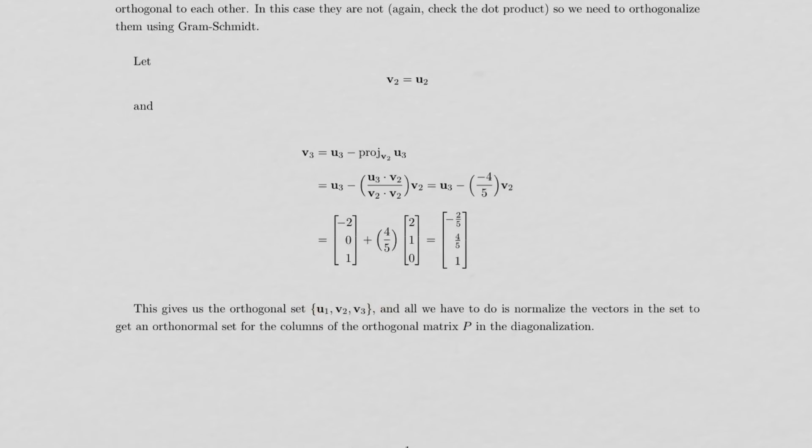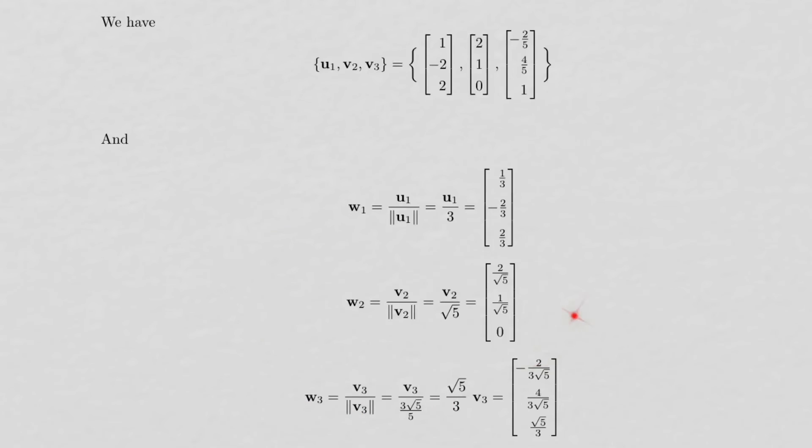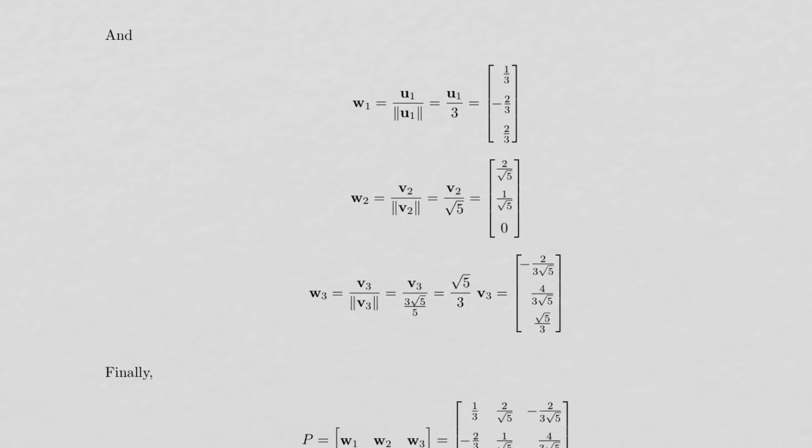And all we need to do is normalize the vectors there, which we do down here, and we get an orthonormal set. So here's our orthogonal set of eigenvectors. And then we calculate the norm of each of these eigenvectors. Again, I skipped the steps.